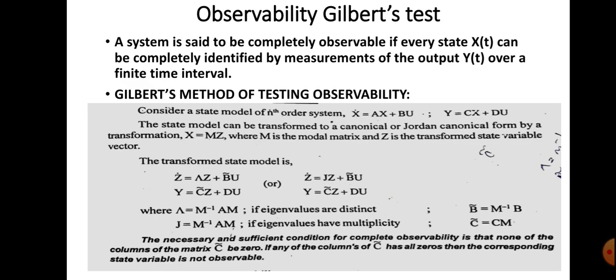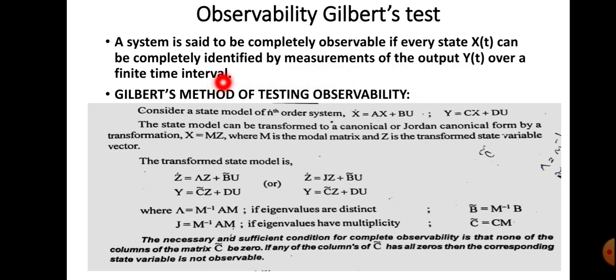This is all about controllability. Next we define observability. In the case of observability we also have two tests: Gilbert's test and Kalman's test. A system is said to be completely observable if every state x(t) can be completely identified by measurements of the output y(t) over a finite time interval.